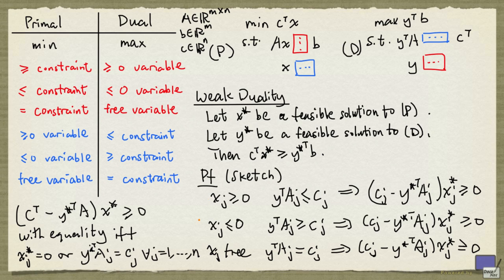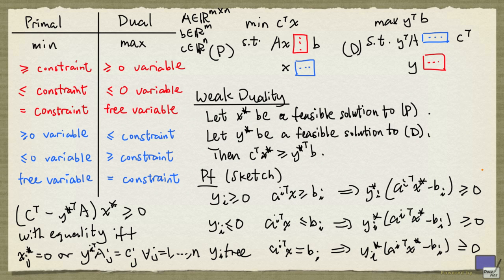Now we can go through a similar analysis for the dual variables. And again, if we add up all these over all i from 1 up to m, then we'll get y star transpose times x star minus b greater than or equal to zero, with equality if and only if each of these holds with equality.